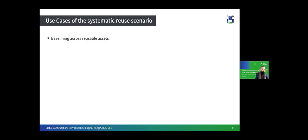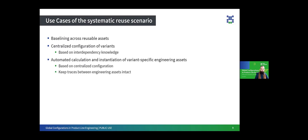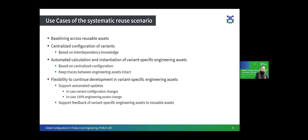Let's have an intermediate overview of capabilities when combining these approaches. You get the ability to baseline across reusable assets, thanks to global configurations. You have centralized configuration of variants based on feature models — based on dependency knowledge that your experts put into this model — thanks to PLE. You get automated calculation and instantiation of variant specific engineering assets based on centralized configuration, thanks to PLE. This also keeps traces between engineering assets intact, thanks to global configurations. Flexibility to continue development in variant specific engineering assets is another advantage, made possible by the combination of PLE, global configurations, and stream concepts.